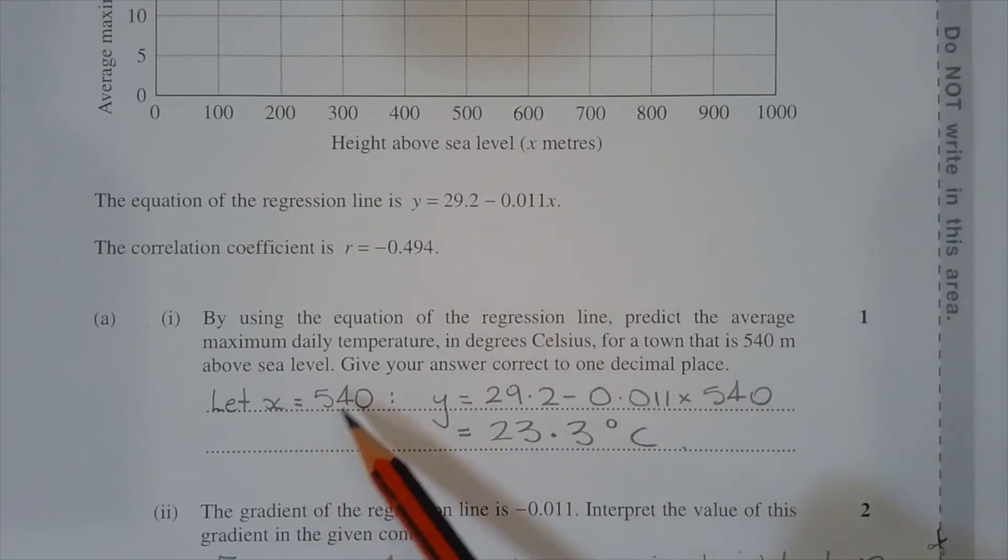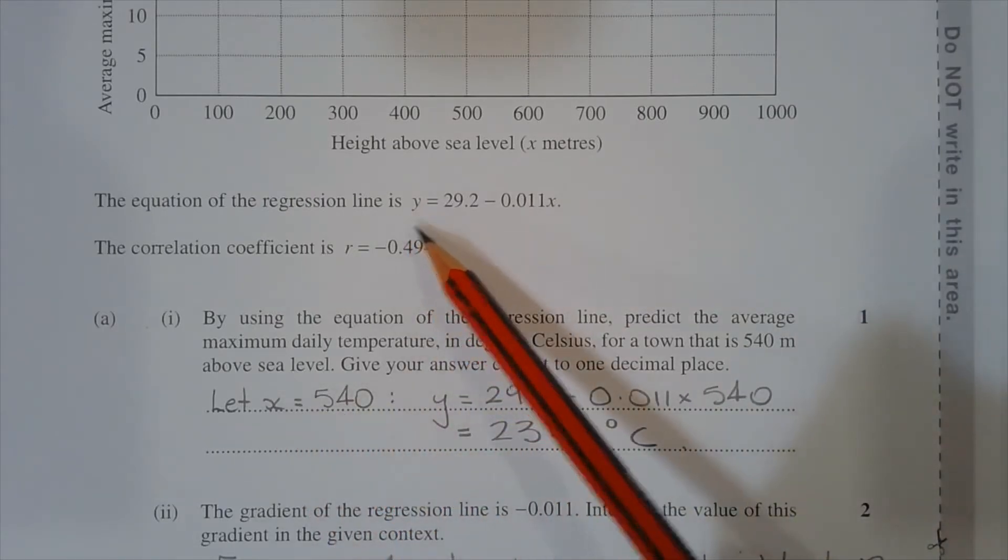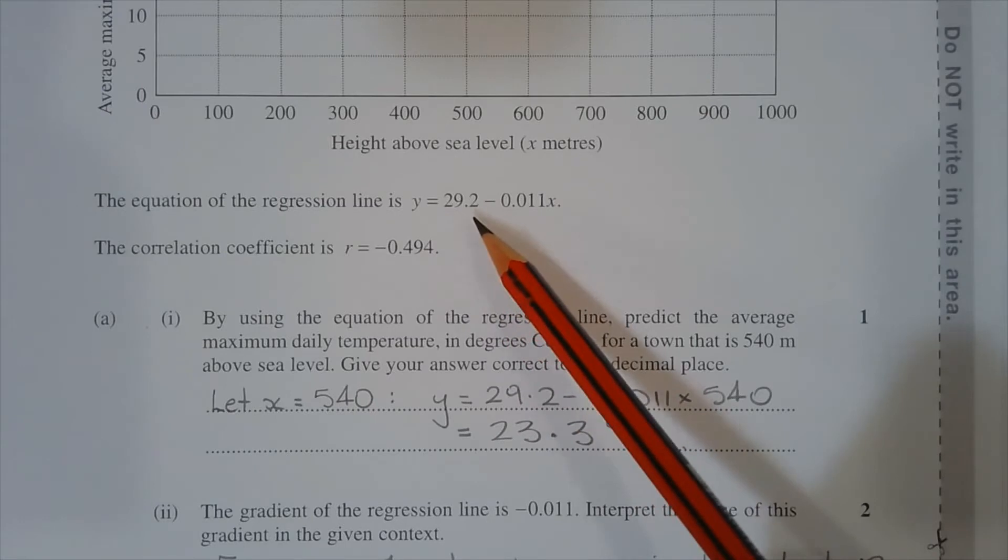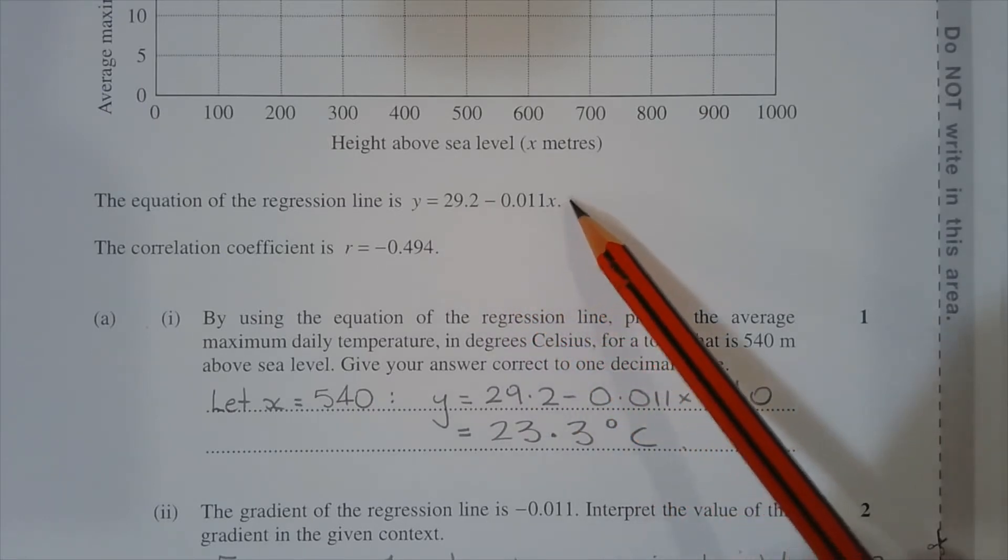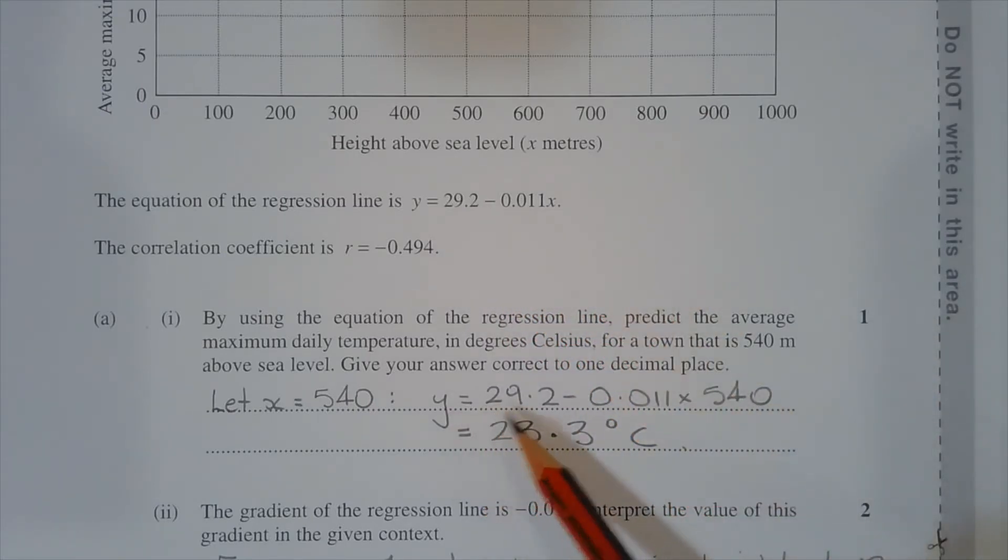Substituting x equals 540 into the equation of the regression line, y equals 29.2 minus 0.011 multiplied by x. y is equal to 29.2 minus 0.011 multiplied by 540, and that equals 23.3 degrees Celsius, correct to one decimal place.